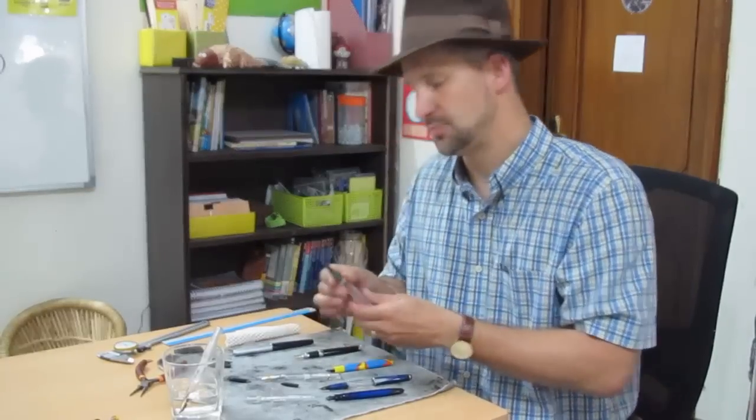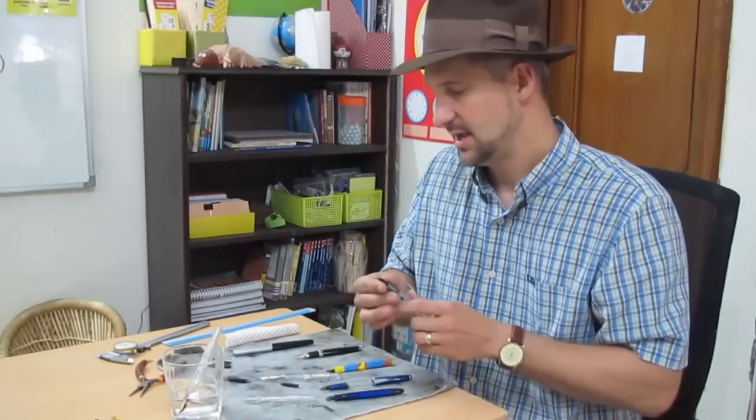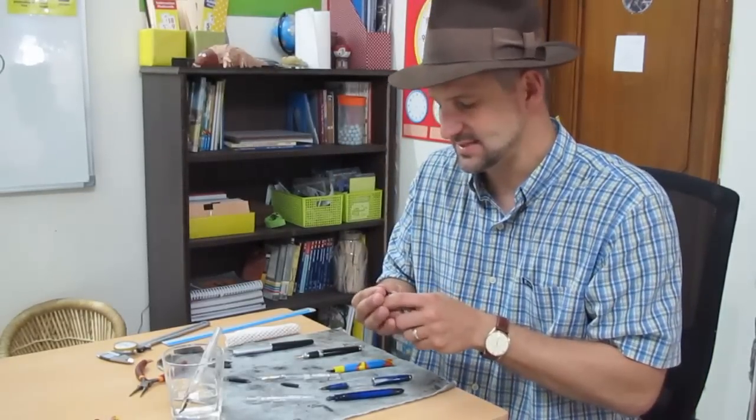Now another problem you might be experiencing is you put in your nib and feed and then you find that the nib is wiggly. It's wiggly back and forth. It's not holding in soundly in the section. This can have a pretty easy fix.